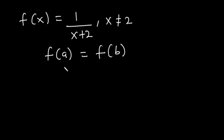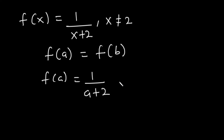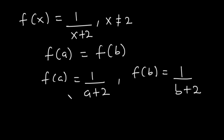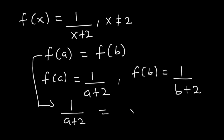f(A) means that wherever you see x in f(x), we replace it with A. And for f(B), wherever you see x, we replace it with B. So f(A) = 1/(A+2) and f(B) = 1/(B+2). Setting f(A) = f(B) gives us 1/(A+2) = 1/(B+2).